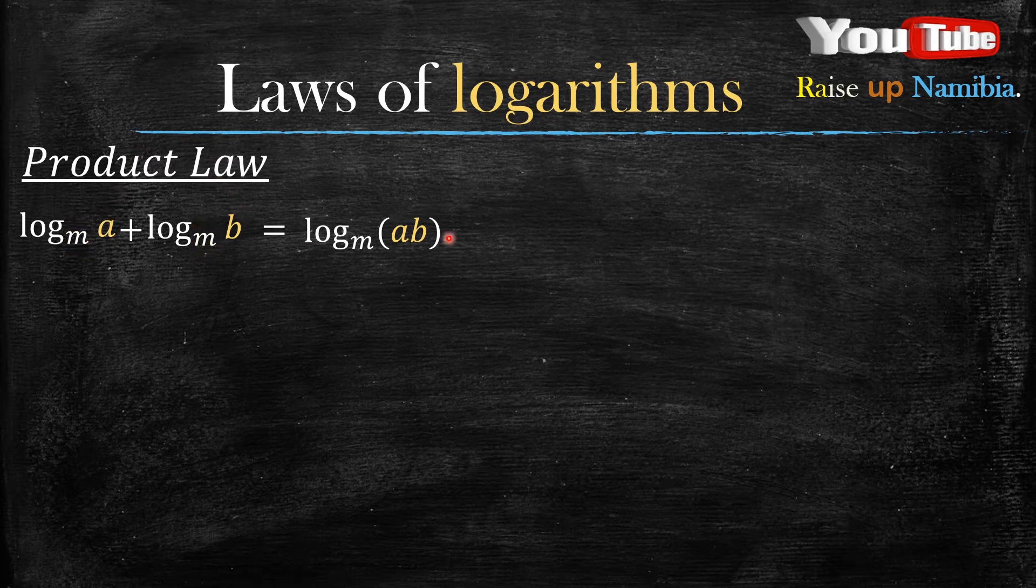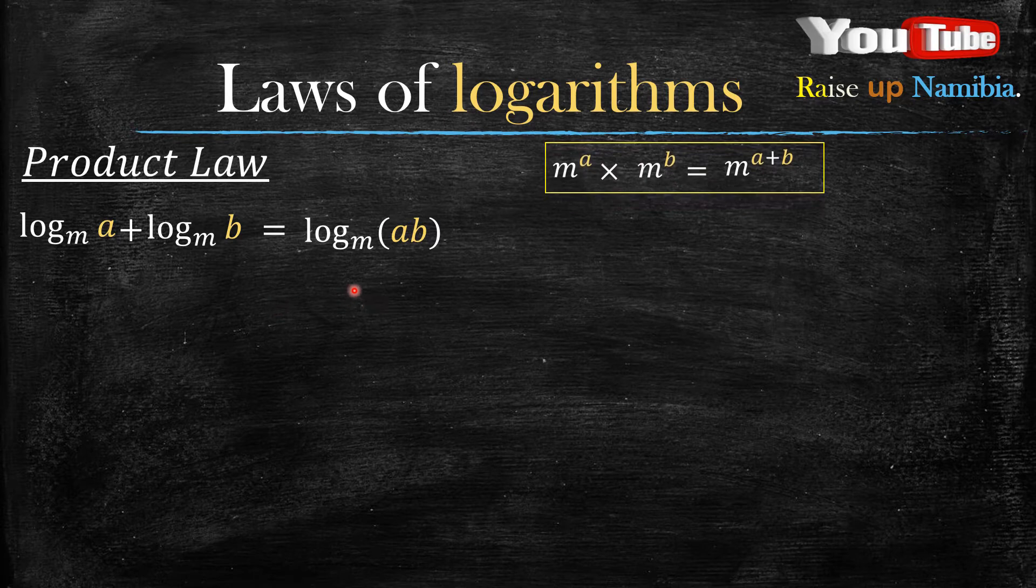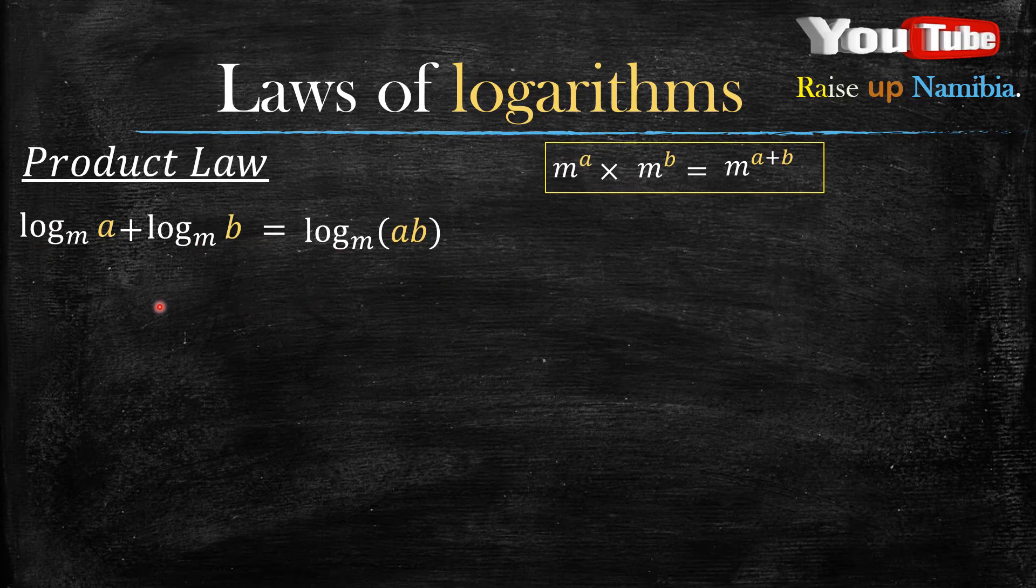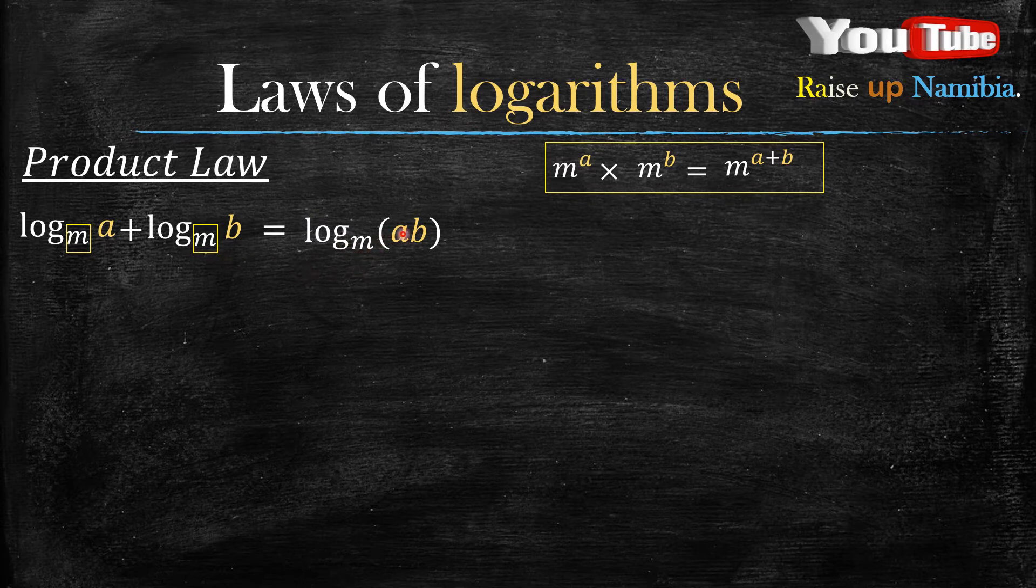You've probably heard that logarithms are the reverse of indices or exponents. Let's look at this law and how it's related to indices. The multiplication law of indices states that when the bases are the same, we add the exponents: m^a × m^b = m^(a+b). This logarithm law is the reverse, meaning when we have the same bases, we multiply a and b.